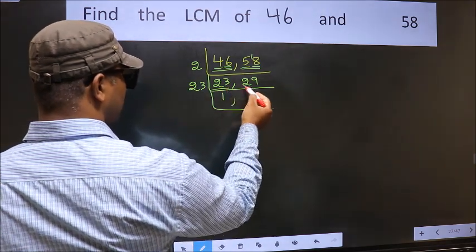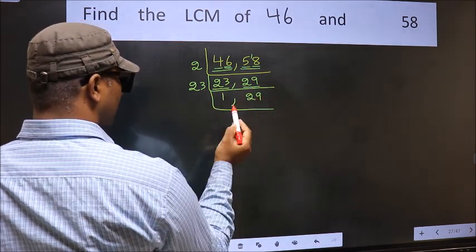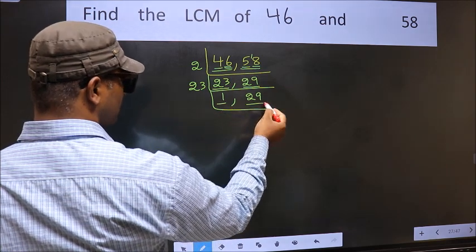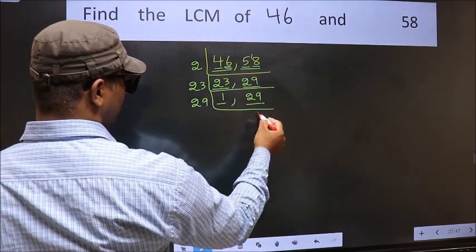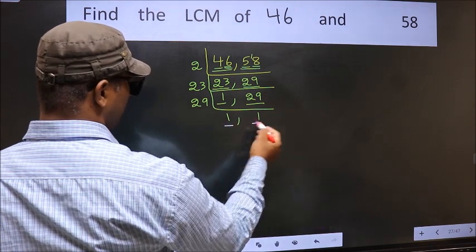The other number 29 is not divisible by 23, so we write it down as it is. Now we got 1 here. So focus on the next number 29. 29 is a prime number, so 29 times 1 is 29. So we got 1 in both the places.